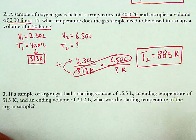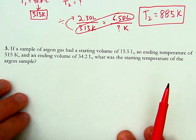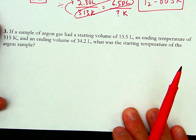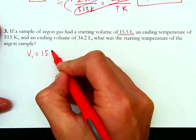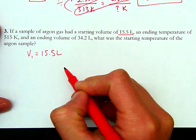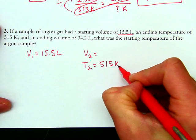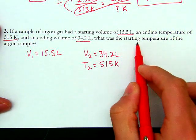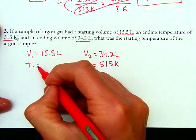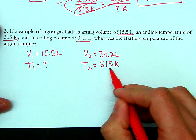So far we've solved for ending volume, starting volume, and ending temperature. The only variable left is starting temperature. A sample of argon gas has a starting volume of 15.5 liters, an ending temperature of 515 Kelvin, and an ending volume of 34.2 liters. What was the starting temperature? Notice this is already in Kelvin, so we don't need to add 273.